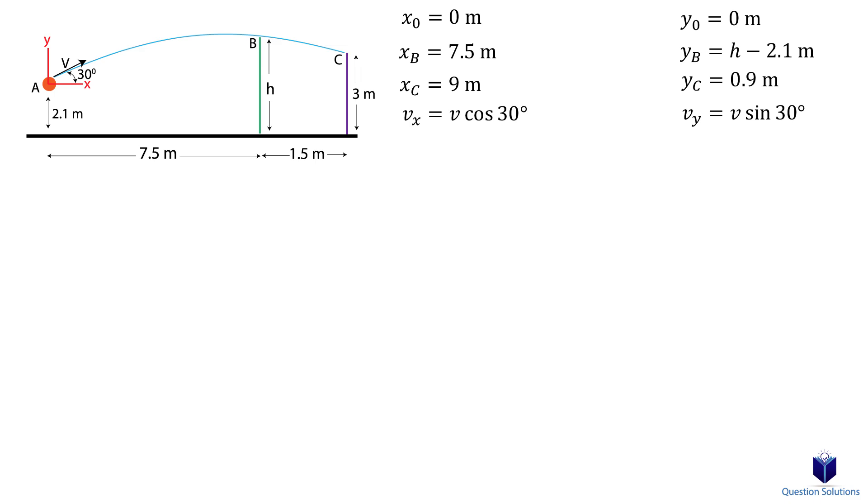Don't forget gravity, which is negative 9.81 meters per second squared. Let's write our first equation for the horizontal motion. We are first writing it for location C to figure out the initial velocity of the ball. We will use this equation. Let's substitute what we know in and isolate it for t.